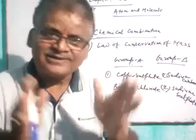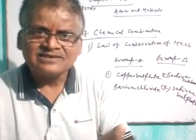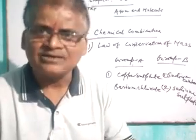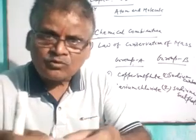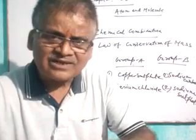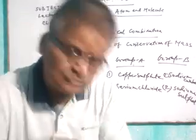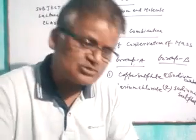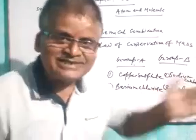ताकि हमारा system air tight हो जाए। उसके बाद उसे digital balance अथवा analytical balance से वजन लेते हैं और उसका mass write down कर लेते हैं। उसके बाद conical flask को थोड़ा तिरछा कर देते हैं, अथवा cork के सहारे जो test tube अंदर लटकाई है उसका धागा थोड़ा ढीला कर देते हैं — ताकि test tube का solution conical flask में गिर जाए। जैसे ही conical flask को तिरछा करते हैं, test tube का solution conical flask में आकर गिर जाता है और copper sulfate solution और sodium carbonate के बीच reaction होती है।